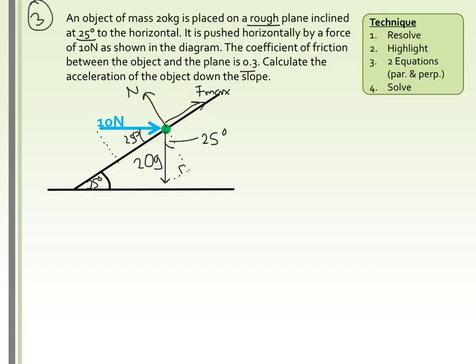If you're unsure about angle rules, review angles in parallel lines on BBC Bitesize. We've resolved all directions, so now we highlight the components. Perpendicular: we have the normal, a component of the weight, and a component of the 10 newtons. Parallel: we have F_max, a component of the 10 newtons, and a component of the weight.